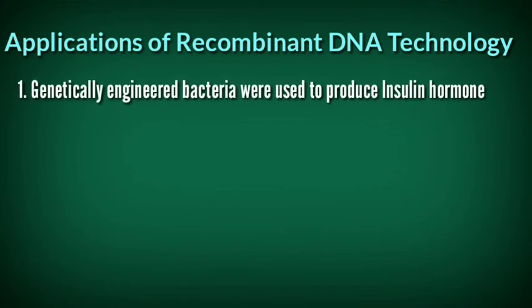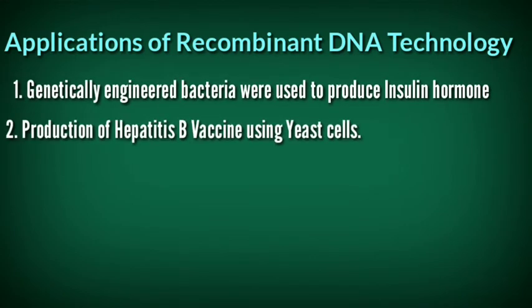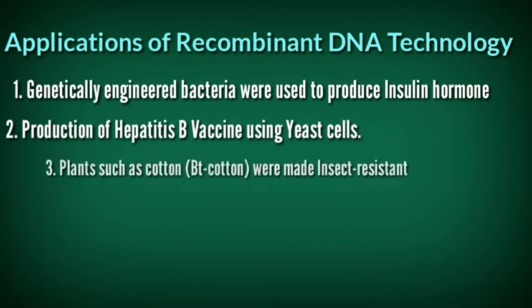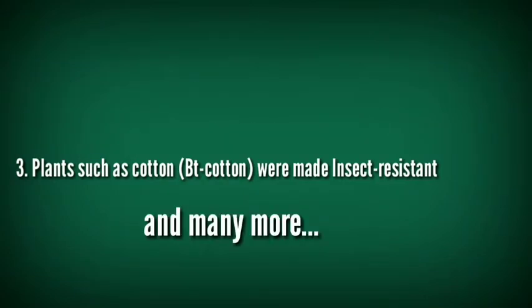Applications of recombinant DNA technology: Number one, genetically engineered bacteria were used to produce insulin hormone. Number two, production of hepatitis B vaccine using yeast cells. Number three, plants such as Bt cotton were made insect resistant. These are only a few applications — there are many more which we will see in this chapter.